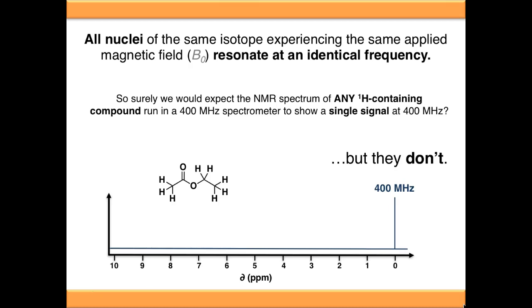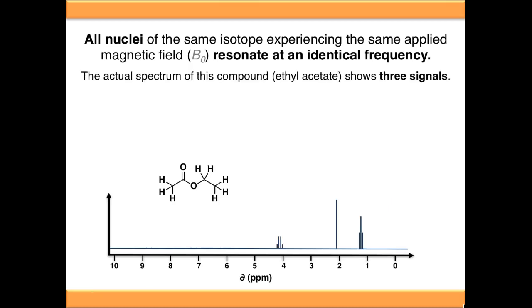But this doesn't happen. The actual spectrum of ethyl acetate shows three signals, and the key word in the statement above is experiencing the same applied magnetic field. Some of these protons experience the applied field slightly different from each other, and you can learn more about that in our screencast on Chemical Shift.